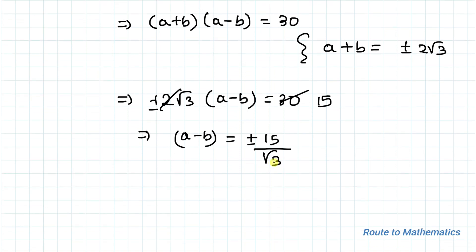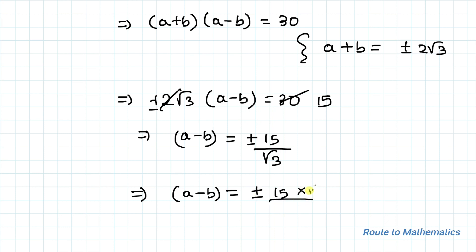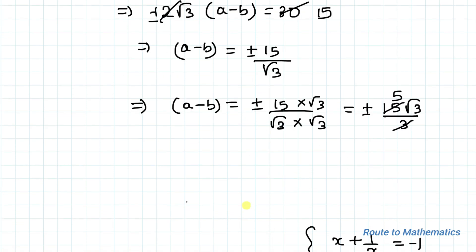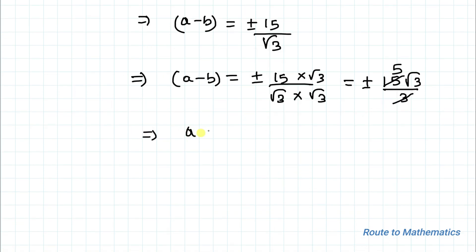To eradicate the √3 in the denominator, we rationalize: a - b = ±15 × √3 / (√3 × √3) = ±15√3 / 3. Since 3 and 15 cancel out by a factor of 3, we get 5. So finally, a - b = ±5√3 is our answer.